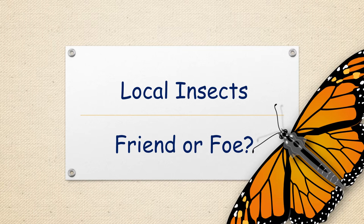But before we do that, let's get into some vocabulary. A friend is someone who takes care of us, they're beneficial to us, and they're someone that we love. Now a foe is the opposite — a foe can be harmful, they are not beneficial, and we usually need to avoid them. So we're going to look at some different insects and see who is our friend, who is our foe, and why.